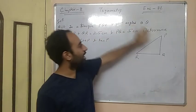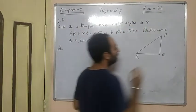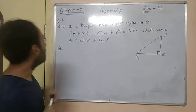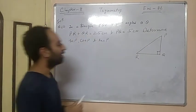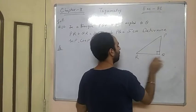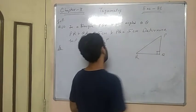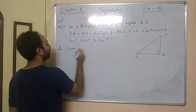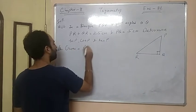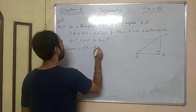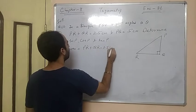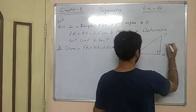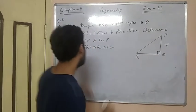In a triangle PQR, right-angled at Q. It is given that PR plus QR equals 25 cm, and PQ equals 5 cm.